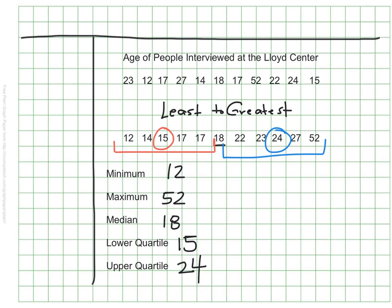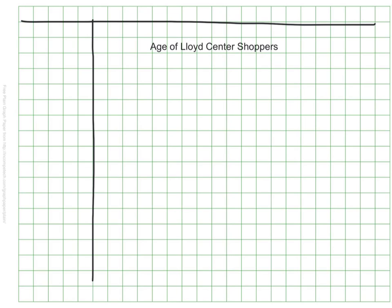Now we have everything we need to make our box and whisker plot. I need to turn my page, but keep these five numbers handy. This box and whisker plot is going to describe the age of the Lloyd Center shoppers. I need to make a number line using a consistent scale. Since I'm going from 12 to 52, I'll count by fives and start at 10, which covers me all the way to the minimum of 12.